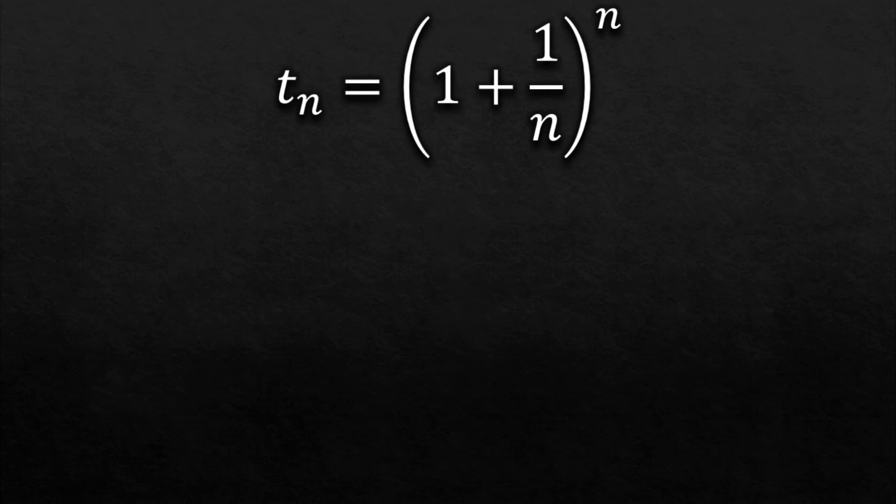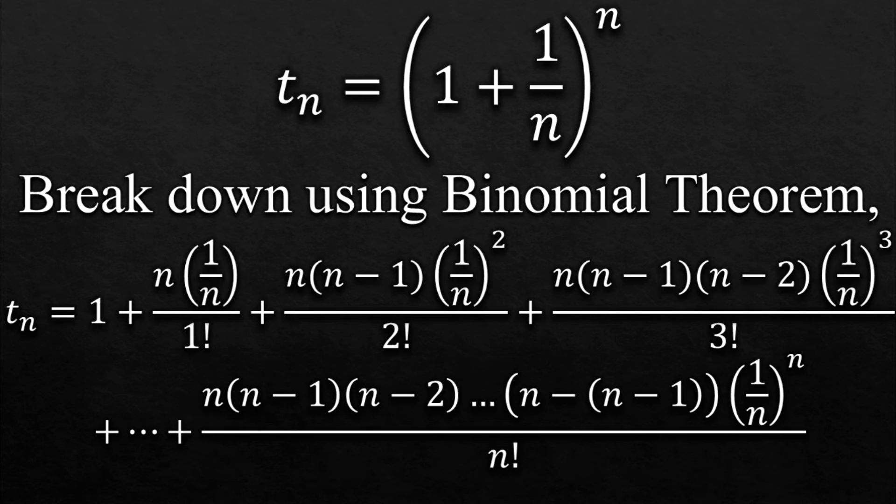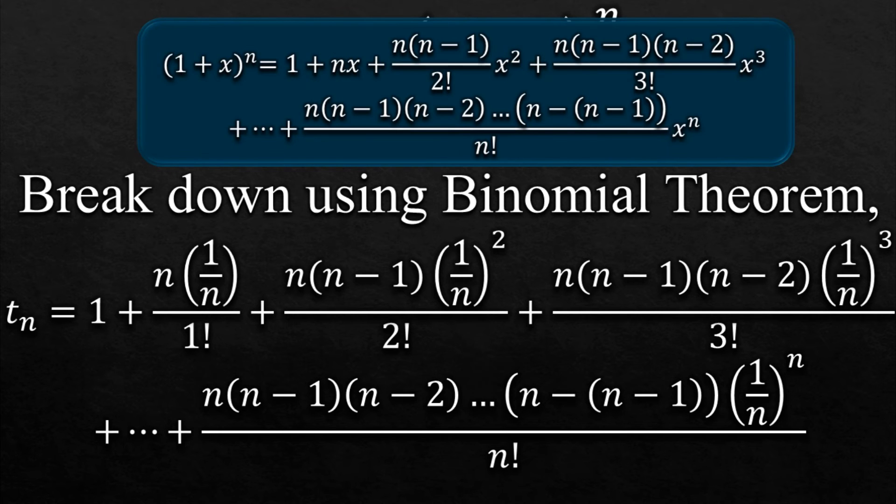Now let's break down the series Tn using binomial theorem. So we get this. I don't need to explain it right? You know the drill. But I have added the binomial expansion for (1 + x)^n for you to compare the terms of series (1 + 1/n)^n with it. Also keep in mind here n is positive, so the expansion is not infinite.